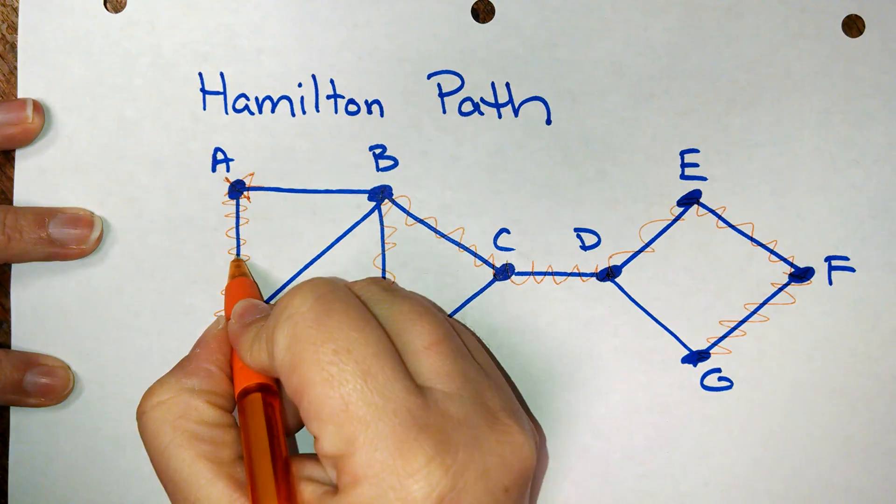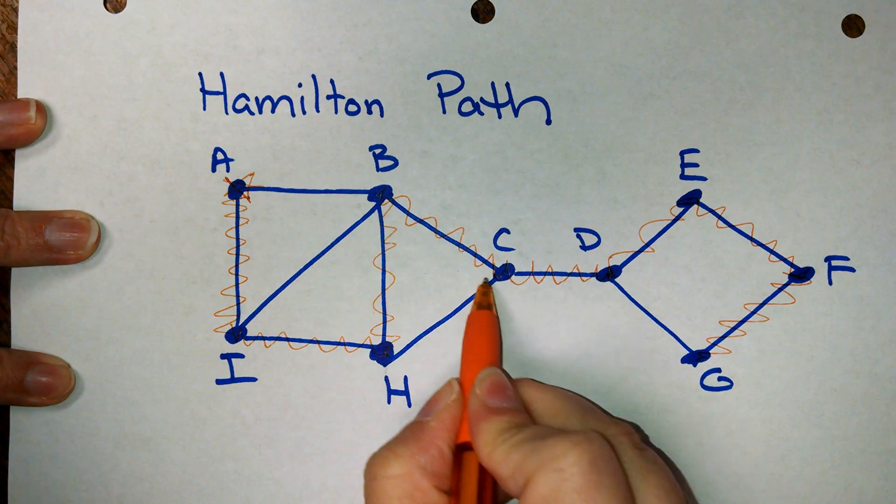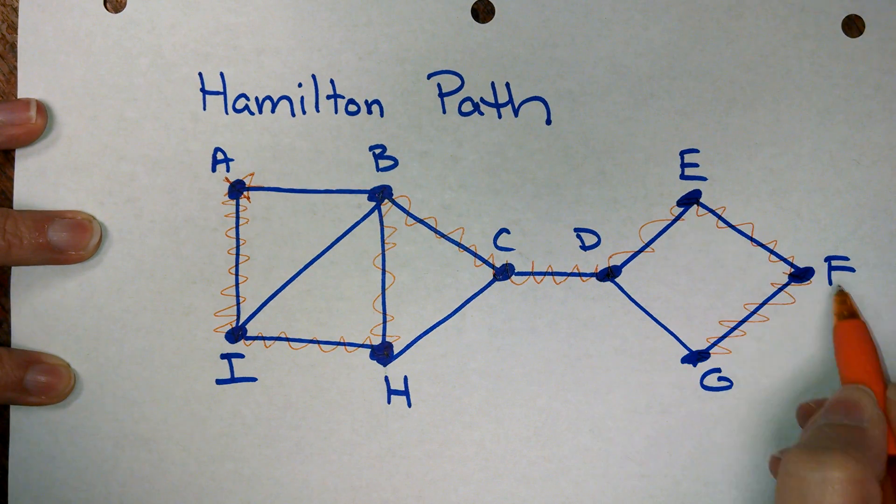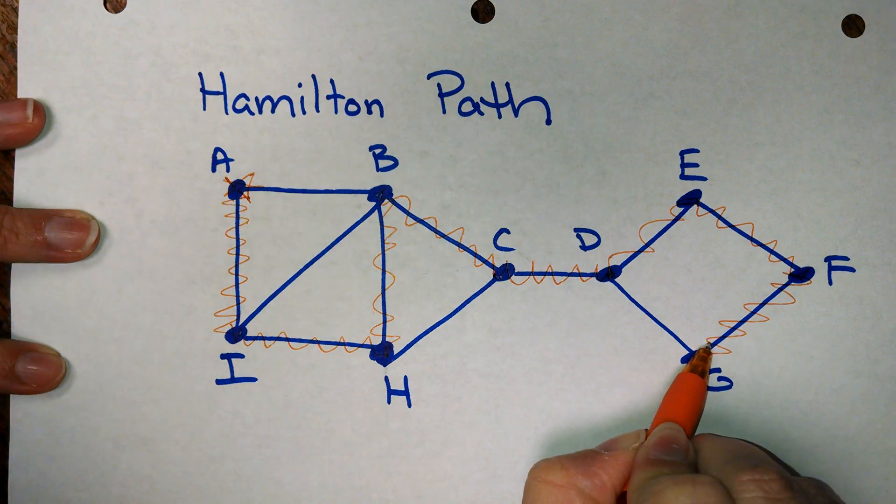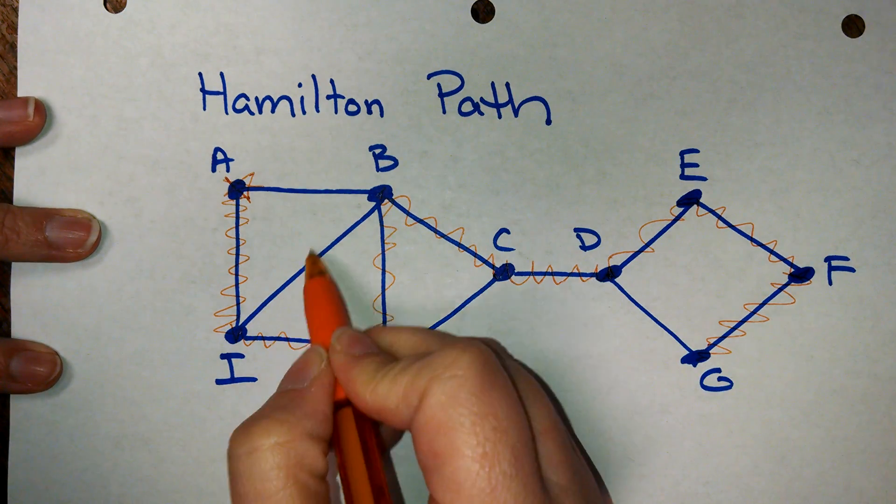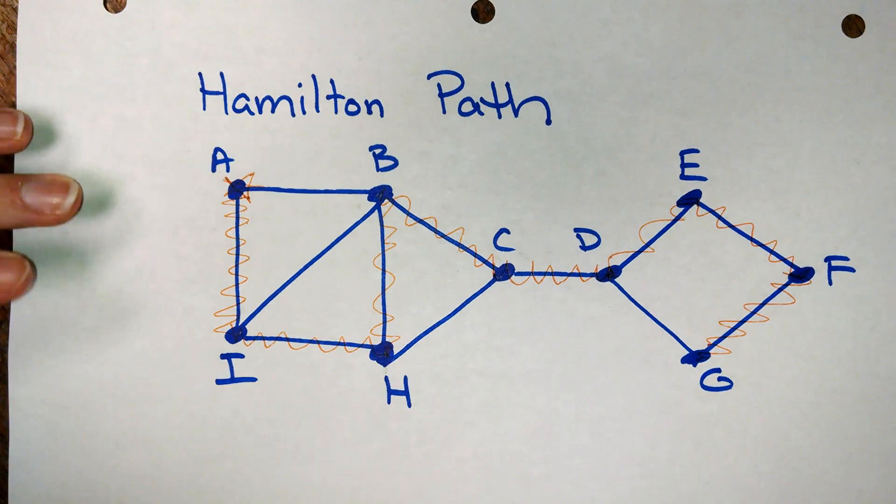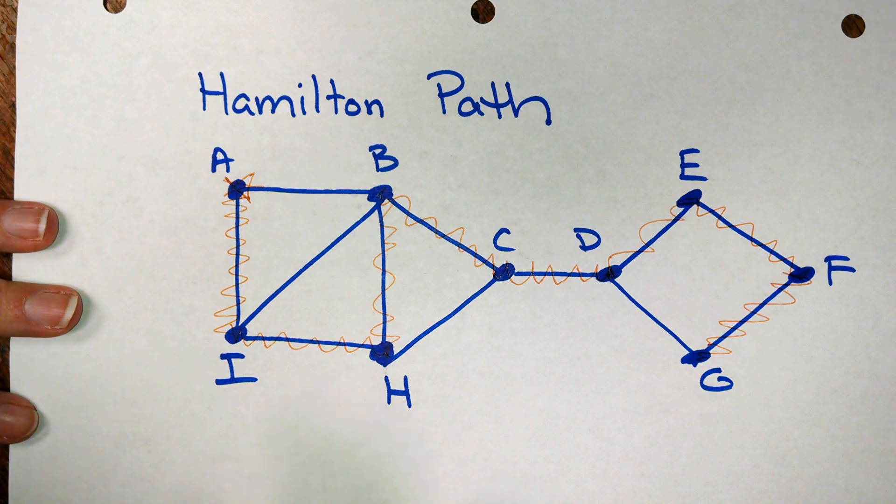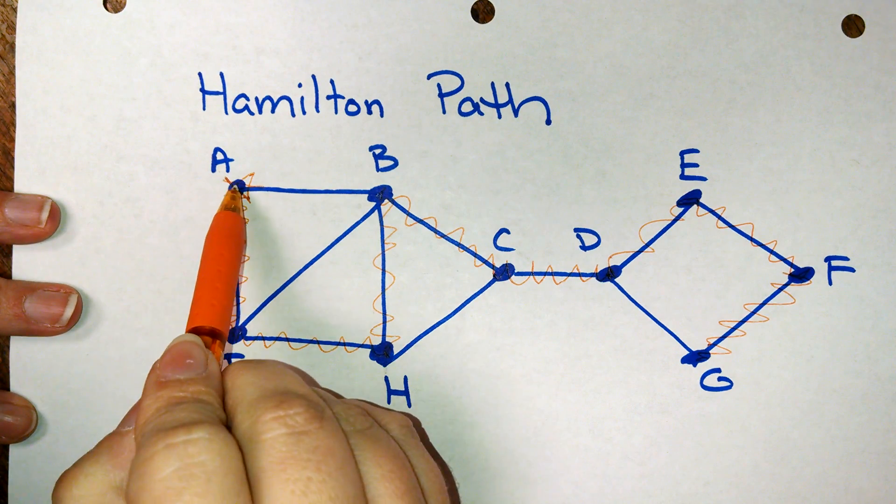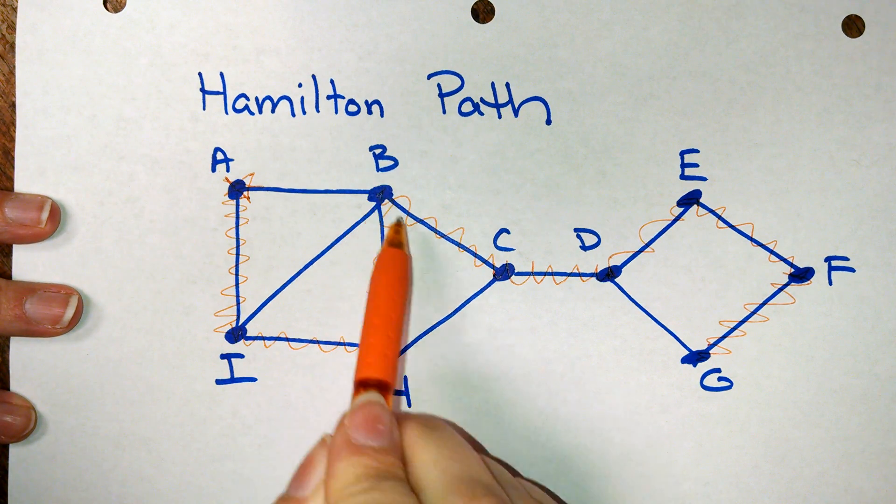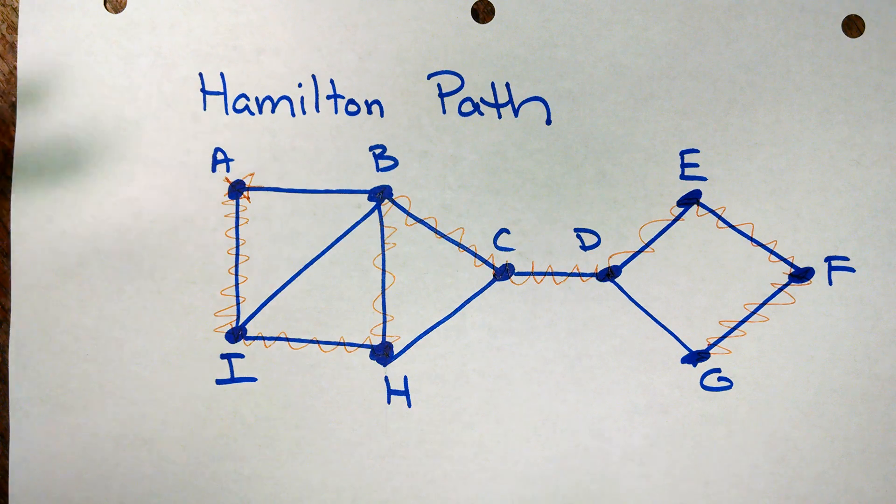So my path just kind of flows A to I to H to B to C to D to E to F to G. You'll notice I didn't even use some of these edges. That's not a part of the rules. All we have to do is make sure that we go through each one of the vertices once and only once. And in this case, we did it.